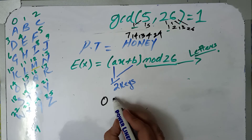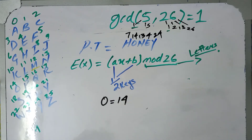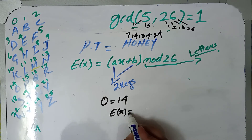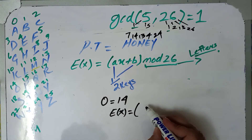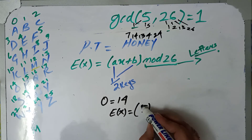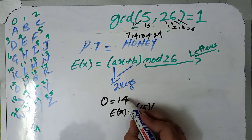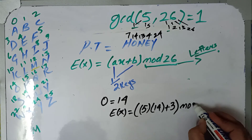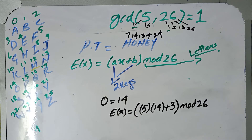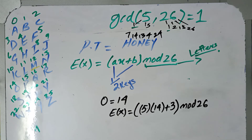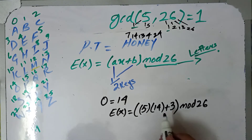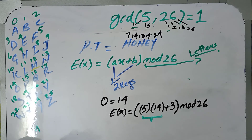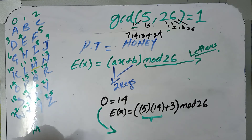Similarly, we will do the same procedure for O. O is 14, so we place it in our formula: a equals 5, and x is now 14, plus b which remains 3, modulus 26. Your task is to compute this value and find out the letter which will be replacing O in this scenario.